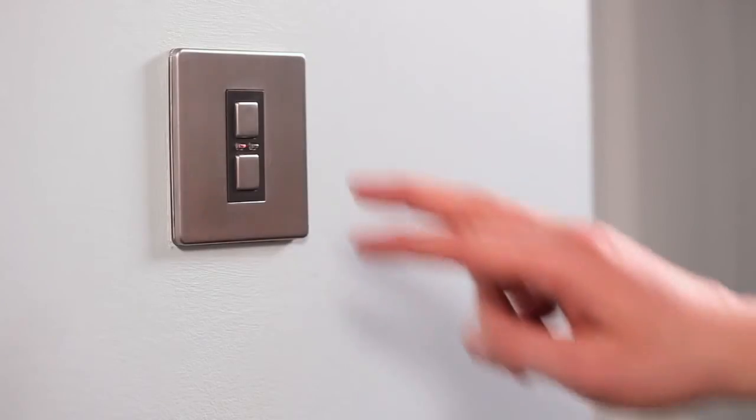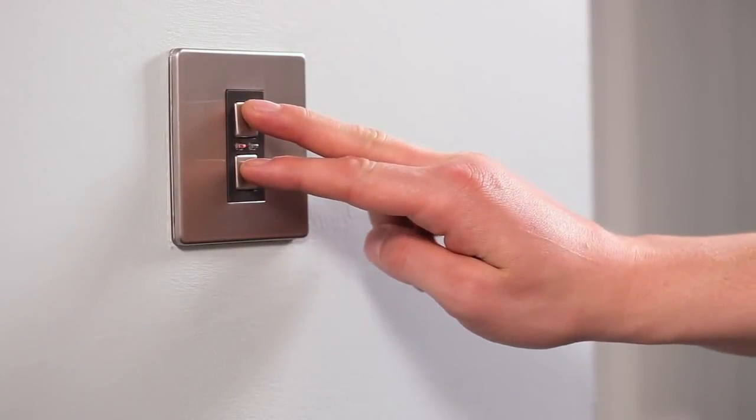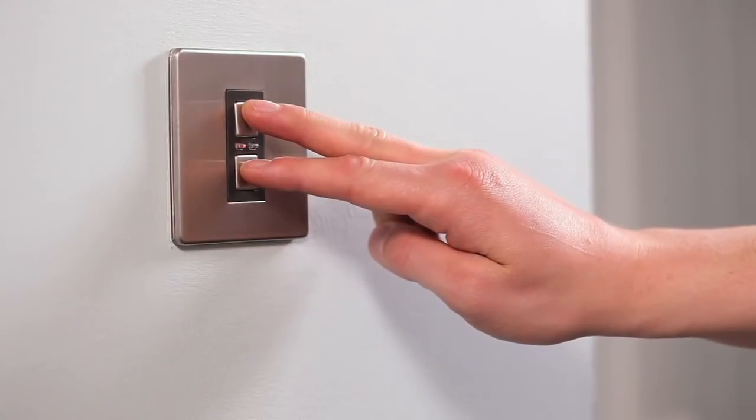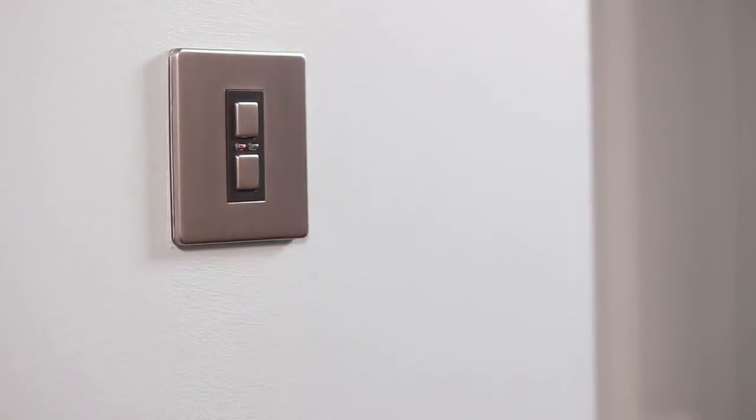Press and hold down both the on and off buttons together until the blue and amber LEDs flash alternately. The dimmer switch is now in linking mode and you have 12 seconds in which to complete the link.